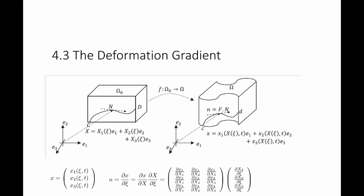After deformation, in the deformed configuration, the object is denoted by omega and every vector is denoted by small x. So x has components x1, x2, and x3. If I follow that same line from C to D in the reference configuration, in the deformed configuration it maps to a line from small c to small d.